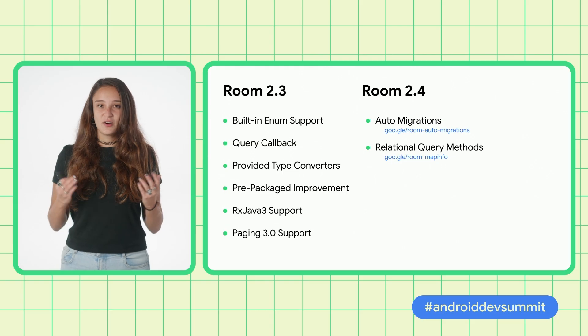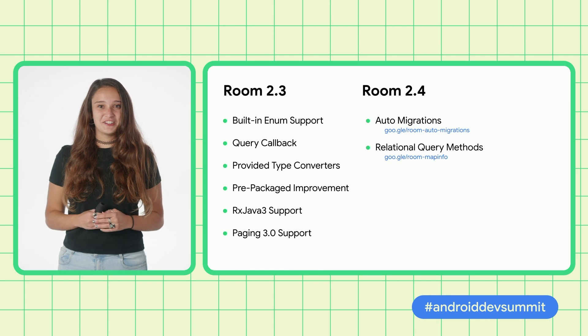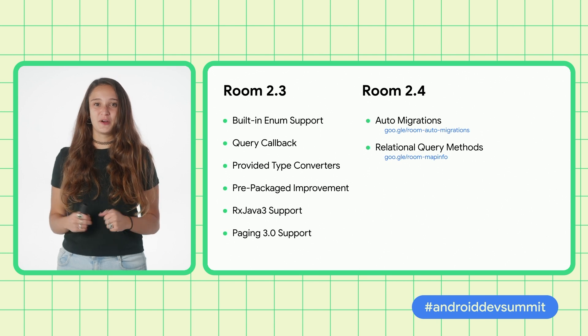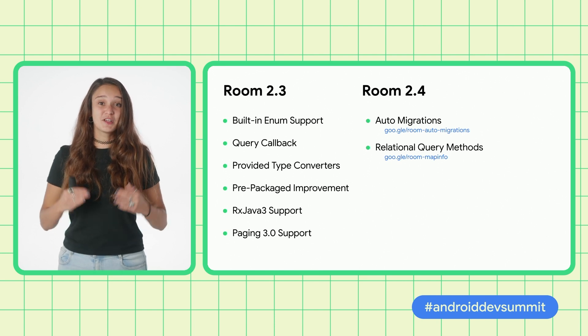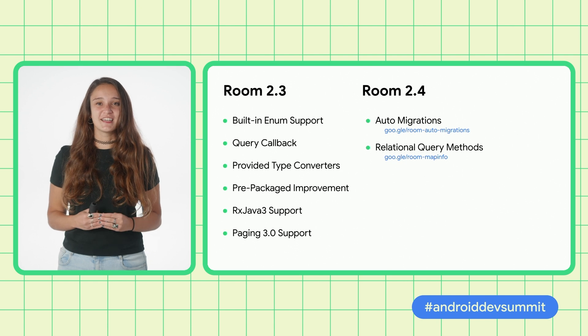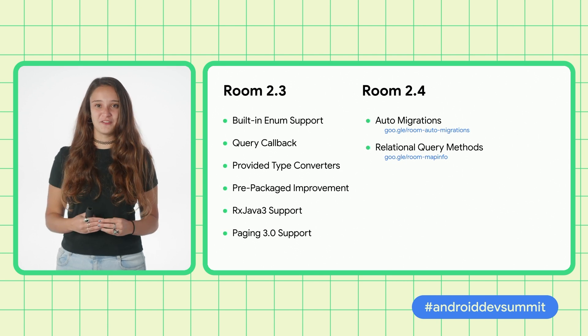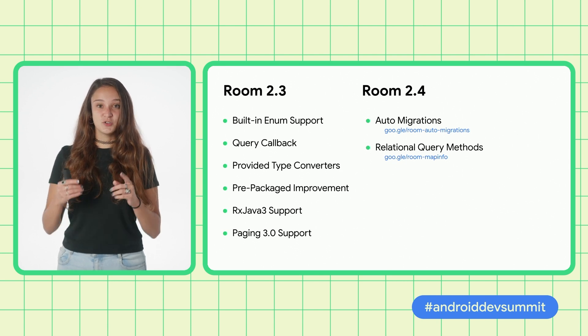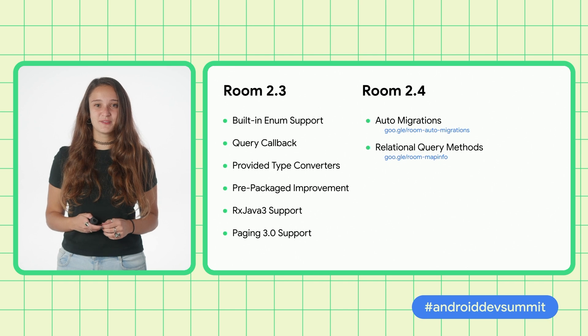As KSP becomes stable, we will expand Room's Kotlin support for long-evaded features like value classes support and generating Kotlin code. Auto migrations, relational query methods, KSP — this was a lot. We hope you're just as excited as we are about all of these Room renovations. Do check them out and start using them in your apps. Thanks for watching.